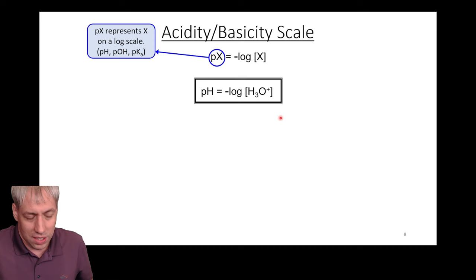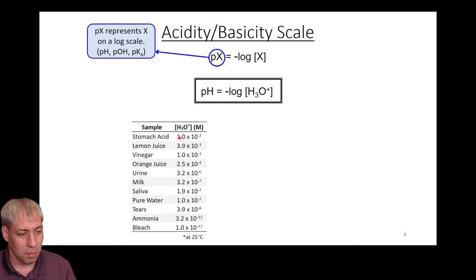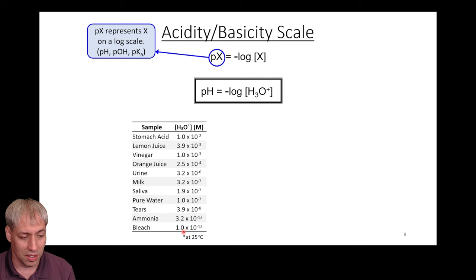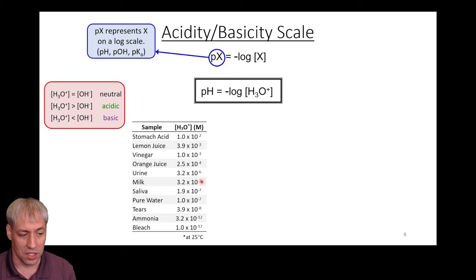pH is equal to the negative log of H3O⁺ (or H⁺) — it represents the concentration of protons generated from an acidic species. For example, stomach acid has [H3O⁺] = 1×10⁻², saliva is 1.9×10⁻⁷, and bleach is 10⁻¹². These numbers span a wide range with many exponents. At room temperature, if [H3O⁺] is less than 1×10⁻⁷, the solution is acidic; if greater, it's basic.